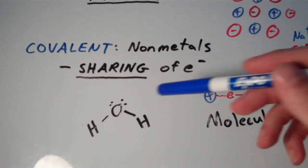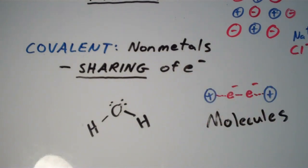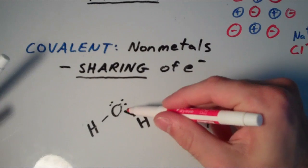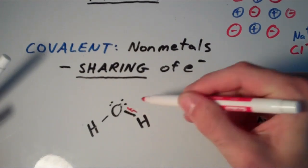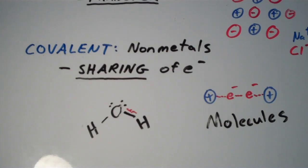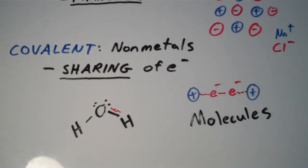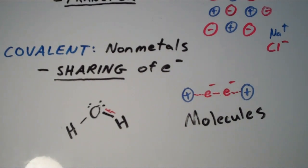They're covalent, right? Because neither of these are metals, they're both nonmetals. So that means the electrons between the hydrogen and the oxygen in this bond are being shared equally between the hydrogen and the oxygen. And that's why molecules are these basically discrete units that act as entities all their own.